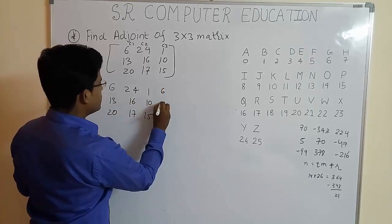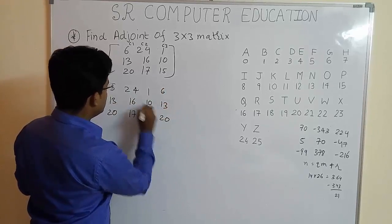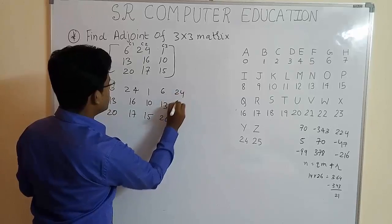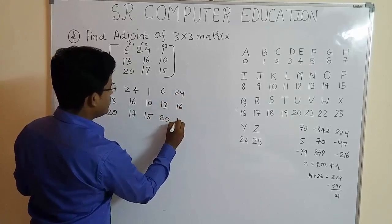Now repeat column 1 and column 2. That is 6, 13, 20 and 24, 16 and 17.